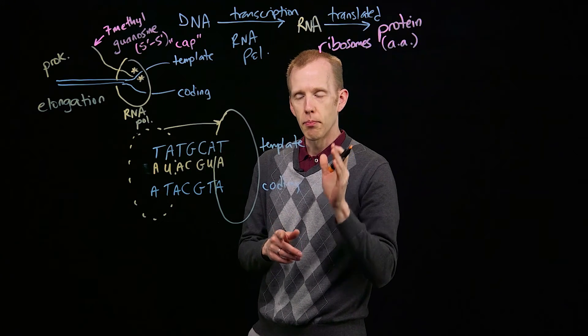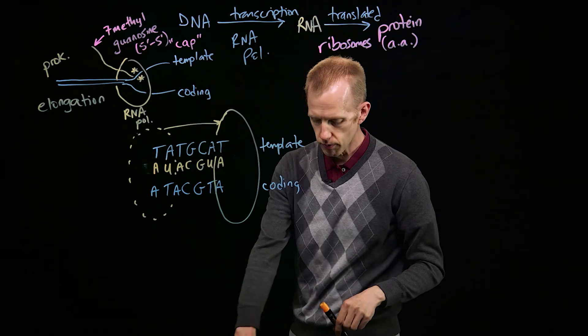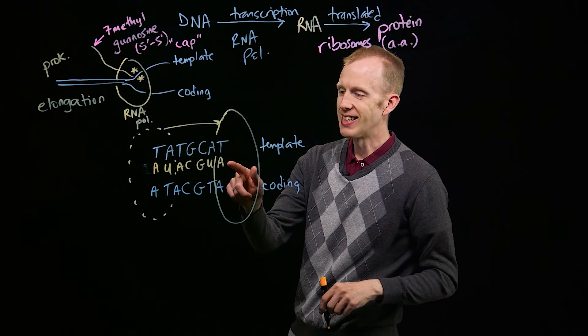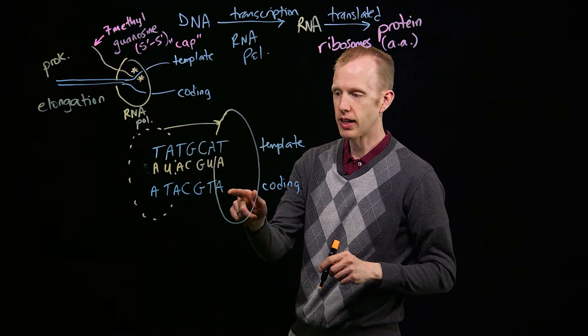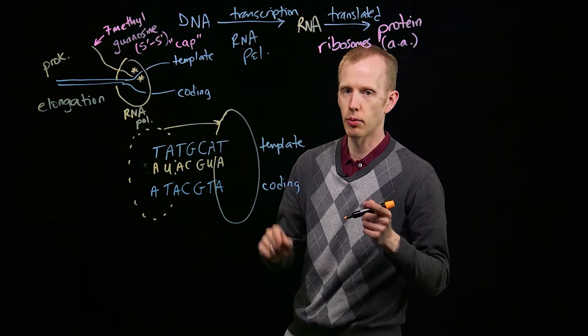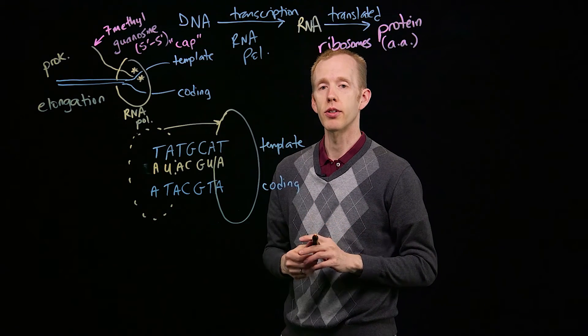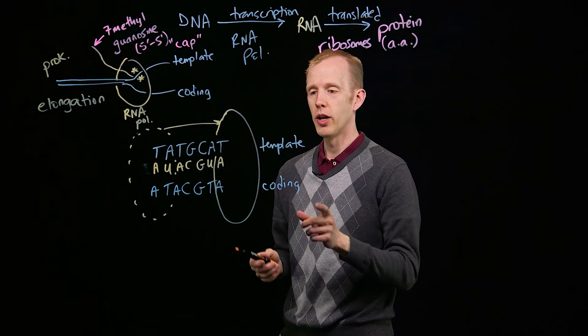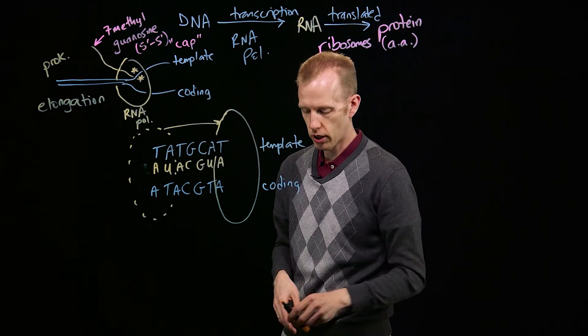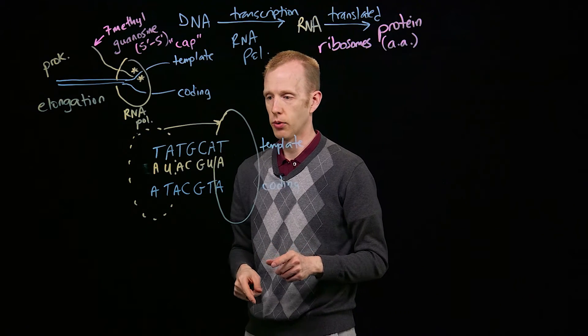The key point here is that an RNA molecule is going to be identical in sequence to the coding strand, because both the RNA molecule and the coding strand are both complementary to the template strand. That's how you tell, when you're given the sequence of a messenger RNA molecule, which strand is the template strand and which was the coding strand. The RNA and the coding strand will match in sequence.